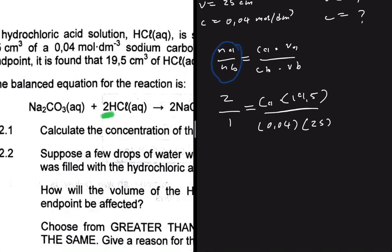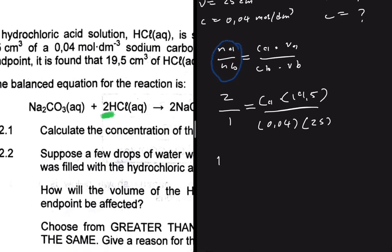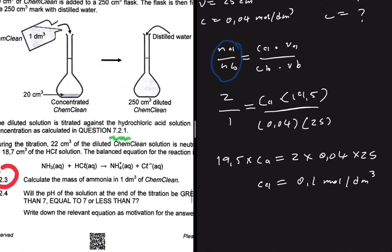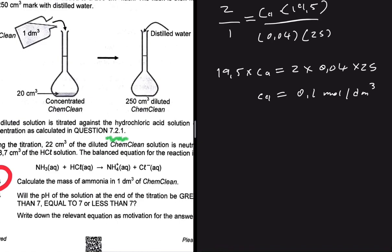Cross multiplying gives: 19.5 times the concentration of the acid equals 2 times 0.04 times 25. Dividing both sides by 19.5, the concentration of the acid is 0.1 moles per decimeter cube. That completes 7.2.1. Now let's go back to 7.2.3.